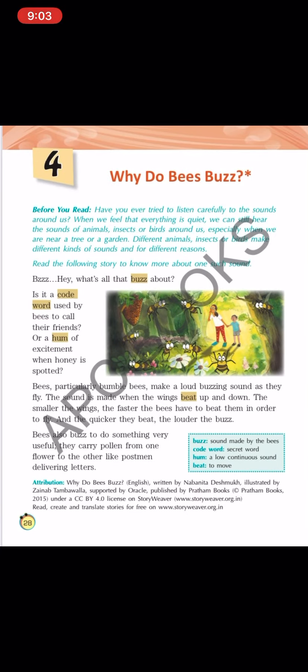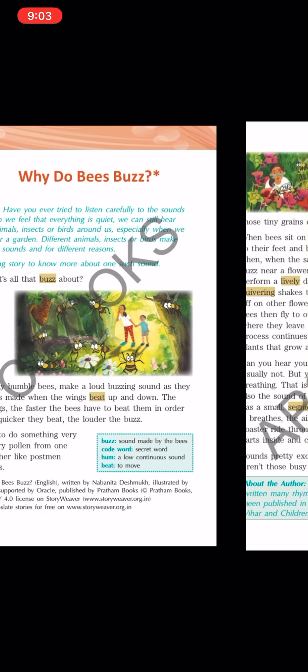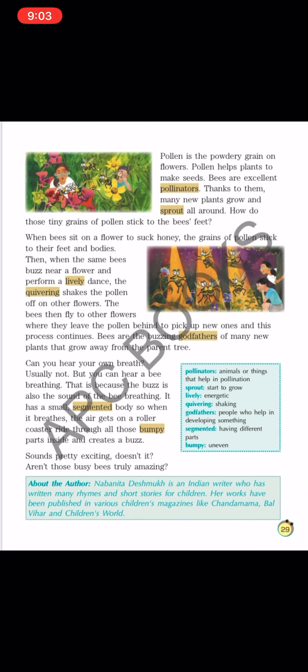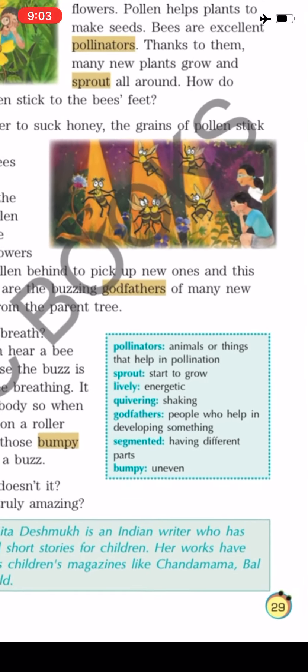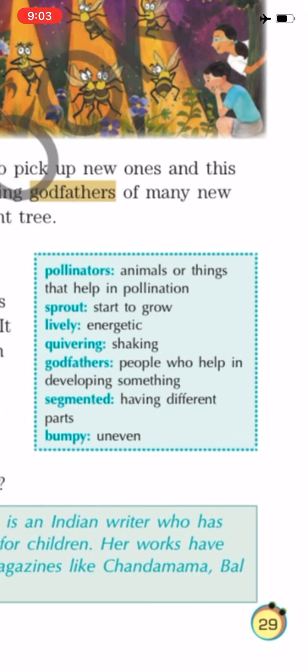Now let's go to page 29. The next word is 'pollinators' — animals or things that help in pollination. Animals या फिर things जो pollination में help करते हैं, उनको हम pollinators बोलते हैं. First of all, what is pollination?